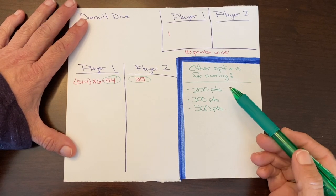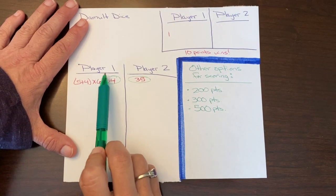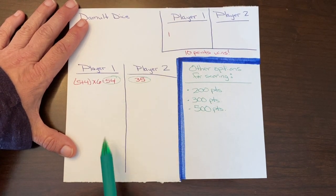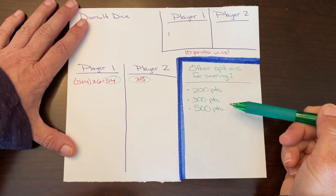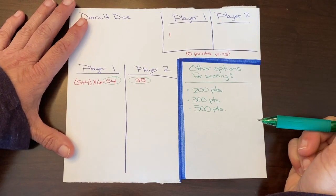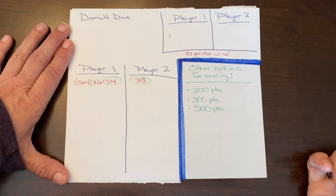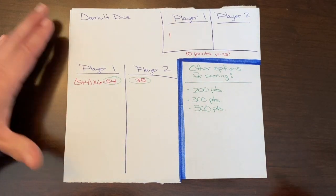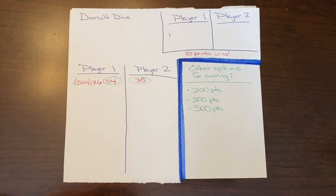Some other scoring options can be to take the total that each player gets and keep a running total, and the first player to hit 200 points is the winner, or perhaps the first player to earn 300 points or 500 points is the winner. So there's lots of different options. You could also play a game of five rounds, and whoever has the most points scored after five rounds is the winner. Lots of different options to come up with.